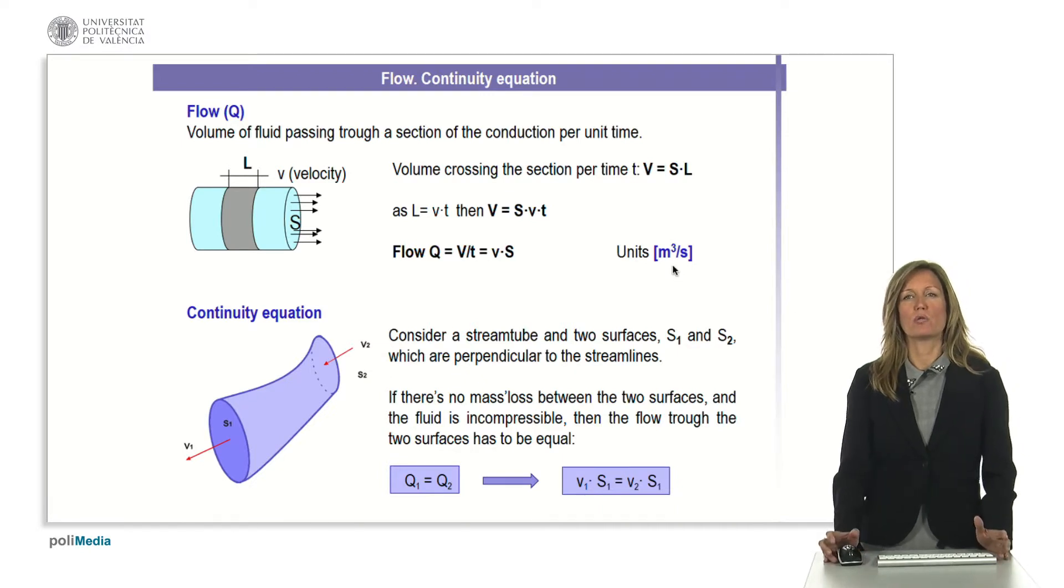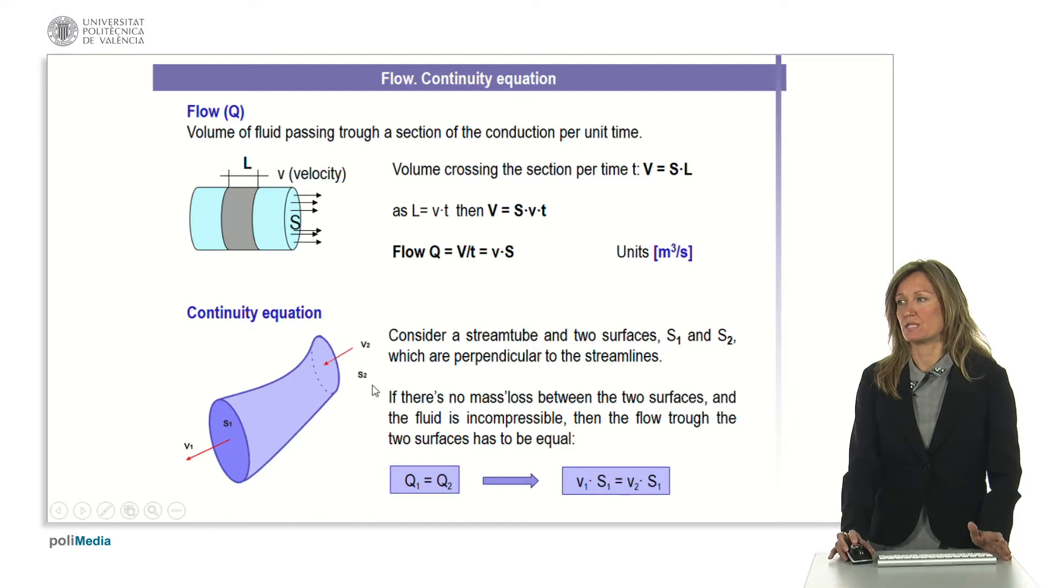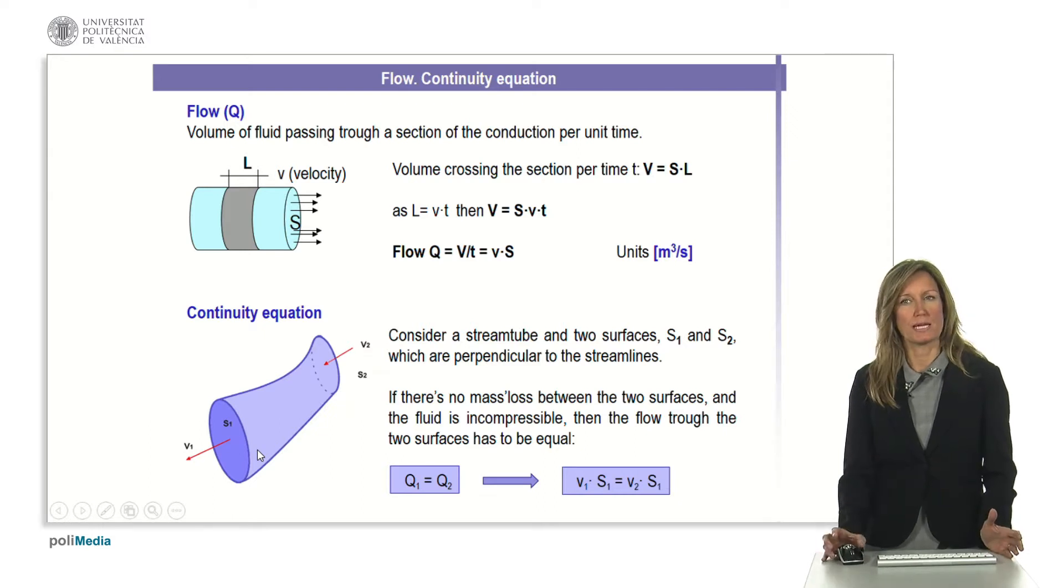With this definition of flow we are going to see the first equation which is the continuity one. Continuity equation comes from the continuity of the mass, so the idea is quite simple, if there are no mass losses between two surfaces in a conduit of a fluid with different sections, then the flow has to be the same.